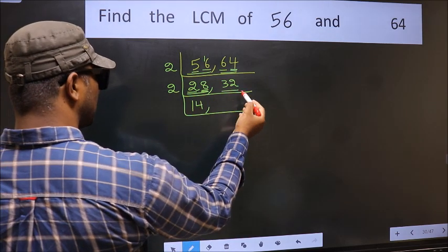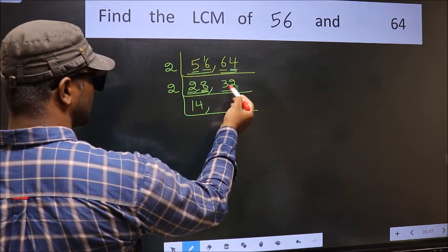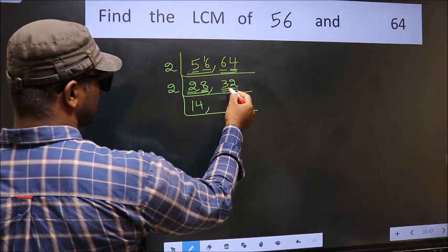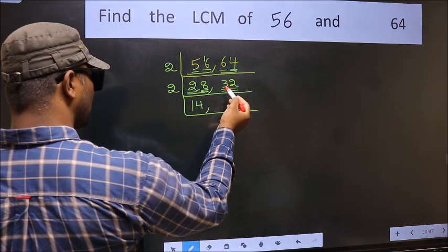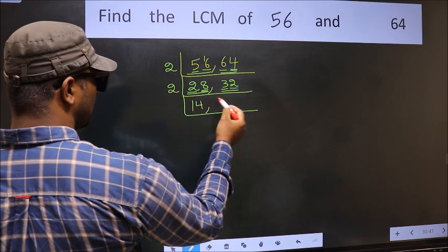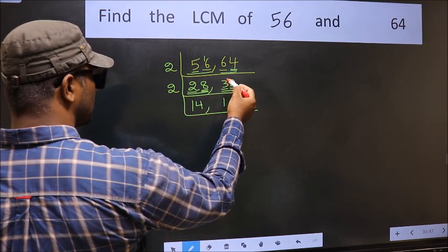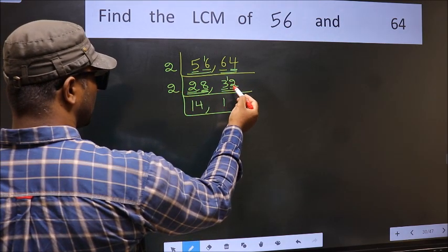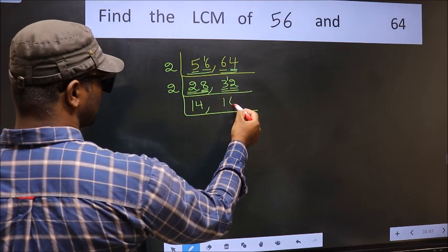Now the other number 32. Last digit 2, even, so this is divisible by 2. First number 3. A number close to 3 in 2 table is 2 times 1 is 2. 3 minus 2, 1, 1 carried forward 12. When do we get 12 in 2 table? 2 times 6 is 12.